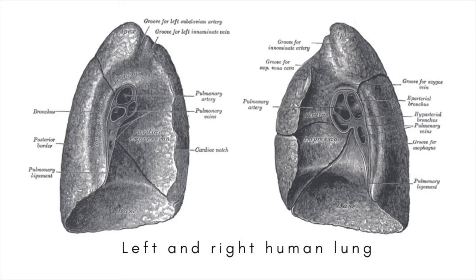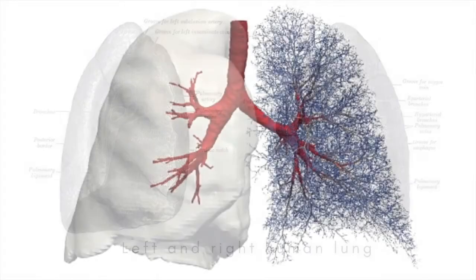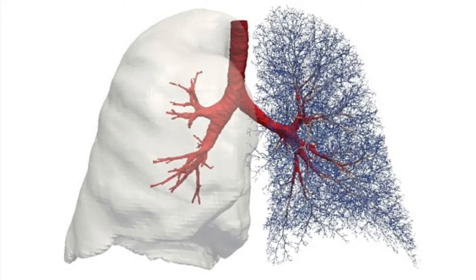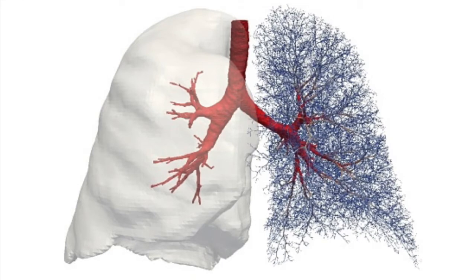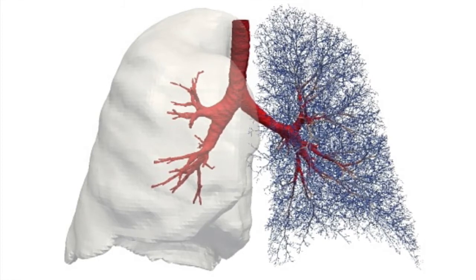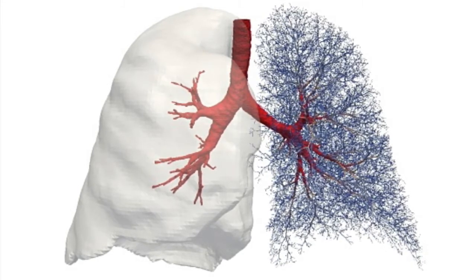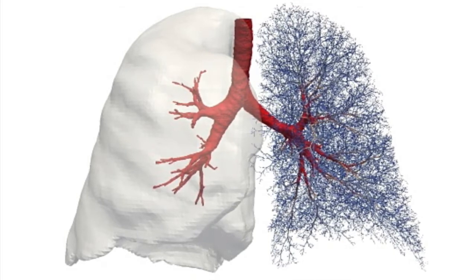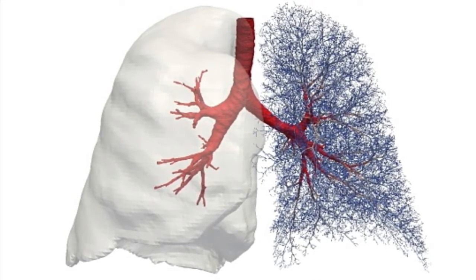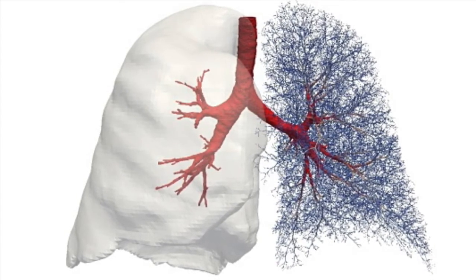the lung has evolved to have an enormous surface area, between 80 and 100 square meters, or roughly half the area of a tennis court,